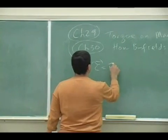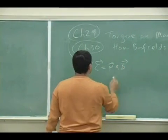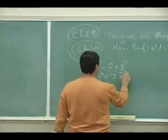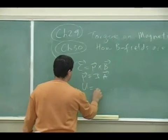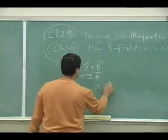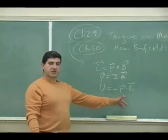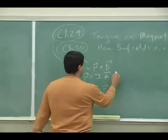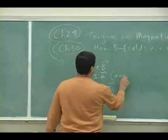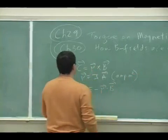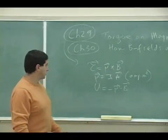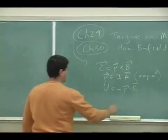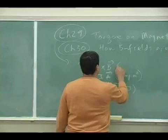Torque is mu crossed into B, and then mu is defined as Ia, and then the potential energy is minus mu dotted into B. And then we saw that this has units of joules. We saw that the magnetic moment has units of amp meter squared, and then the torque has units of newton meters. So when we combine all of these here, let's put the units here, joules and newton meter.